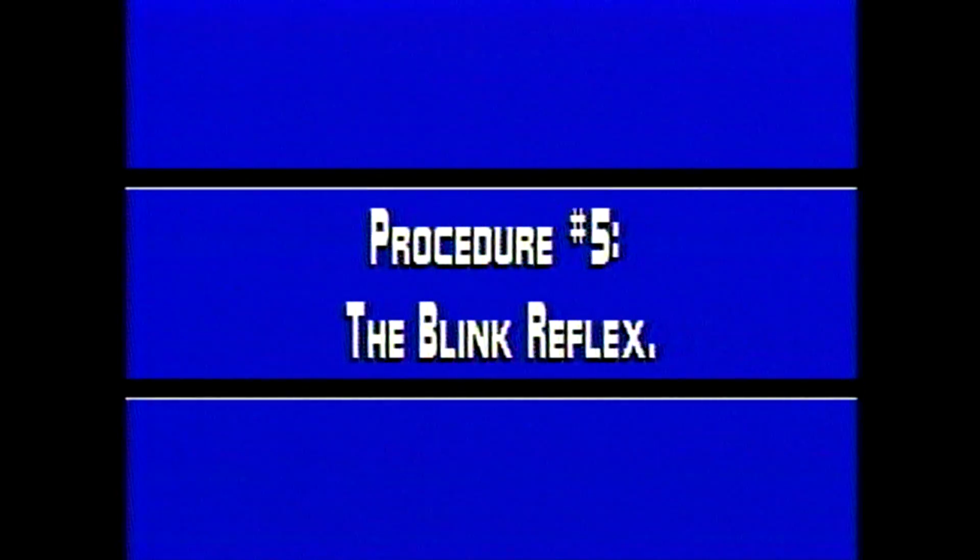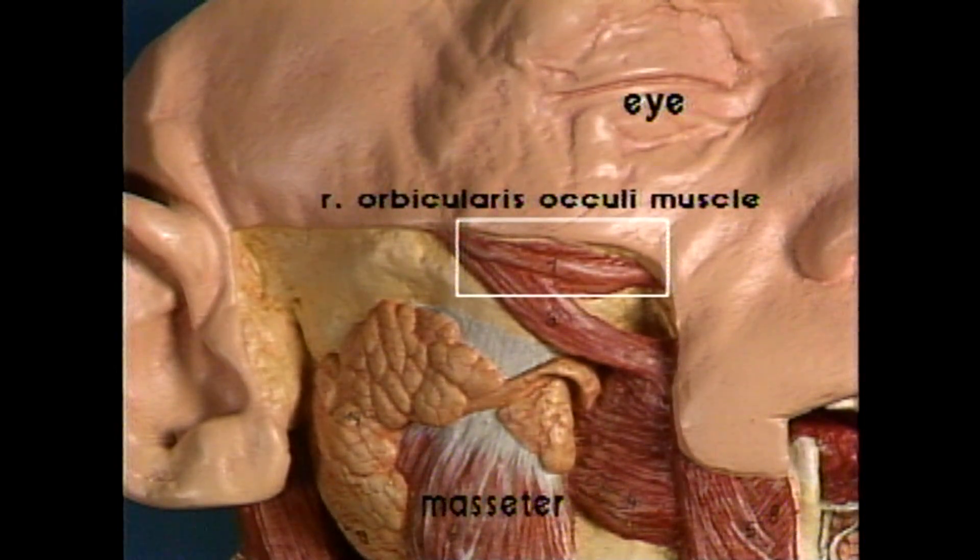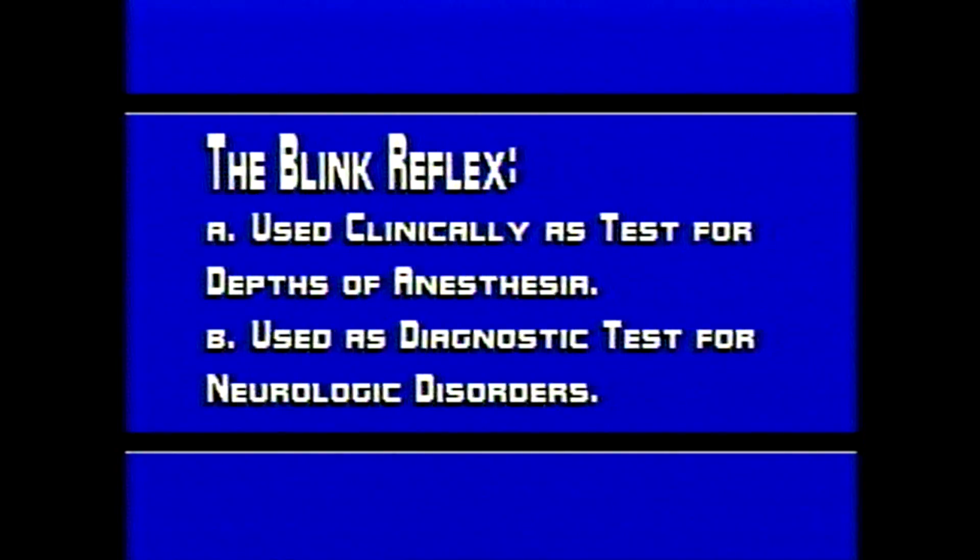The blink reflex is a facial reflex. It results from the sensory stimulation of the cornea. Sensory input is relayed by the ophthalmic branch of the trigeminal nerve to the spinal tract nucleus. The interneurons connect to alpha motor neurons located in the facial nucleus. This motor nerve recruits motor units in the orbicularis oculi and the eye blinks. This reflex is used clinically when testing for the different depths of anesthesia. It is also used as a diagnostic test for certain neurologic disorders, such as facial paralysis.